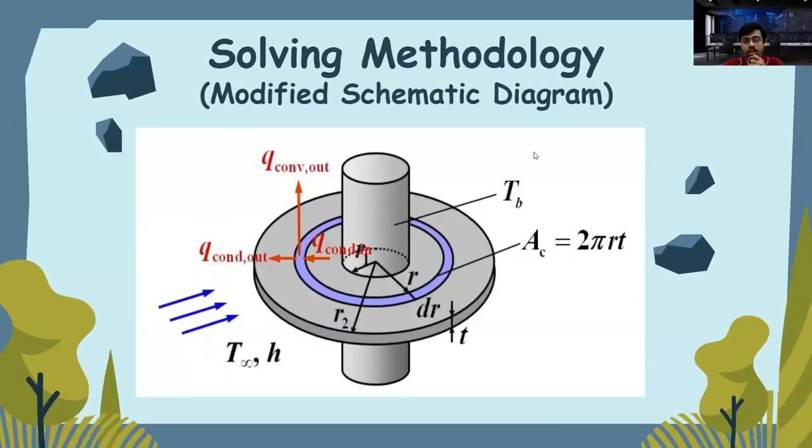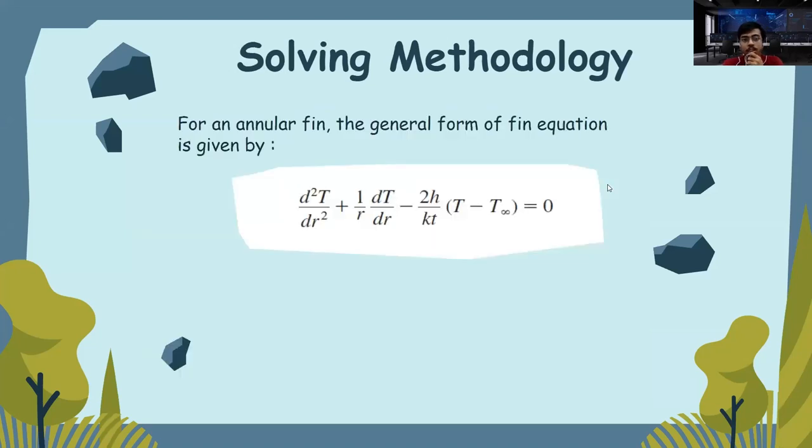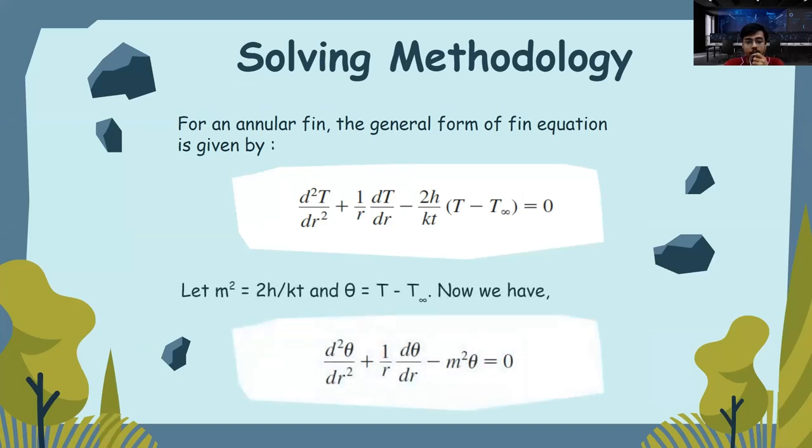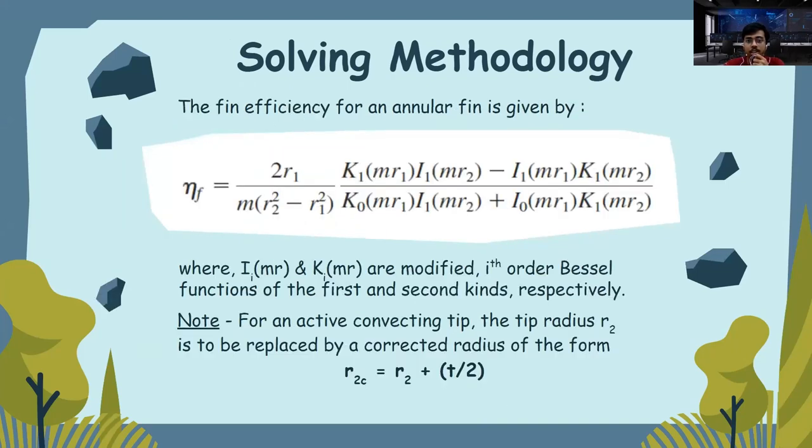Solving methodology. This is the modified schematic diagram. We have an annular fin with a tube at the center containing the refrigerant. Air is flowing across the fin at velocity u and at temperature T∞. For an annular fin, the general form of the fin equation is given by the following. Let m² = 2h/(kt) and θ = T - T∞. We get the simplified equation as d²θ/dr² + (1/r)(dθ/dr) - m²θ = 0. Fin efficiency for an annular fin is given by the following equation, where I and K are modified Bessel functions of the first and second kinds. Note that for an actively convecting tip, tip radius r2 has to be replaced by a corrected radius r2c = r2 + t/2.